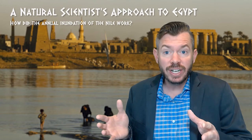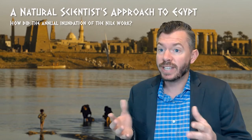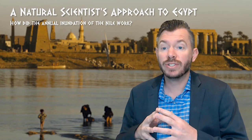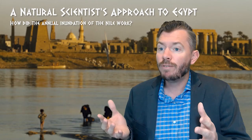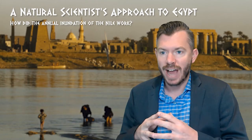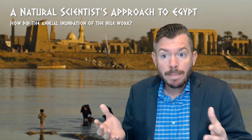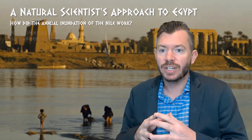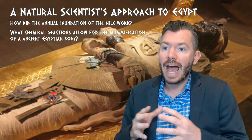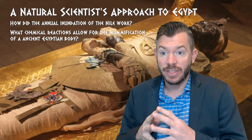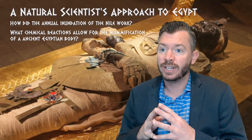So in ancient Egypt, for example, a natural scientist might be interested in understanding the dynamics of the annual flooding of the Nile River, or measuring the impact of irrigation, or understanding the chemical reactions of the mummification process and their impact on body preservation.